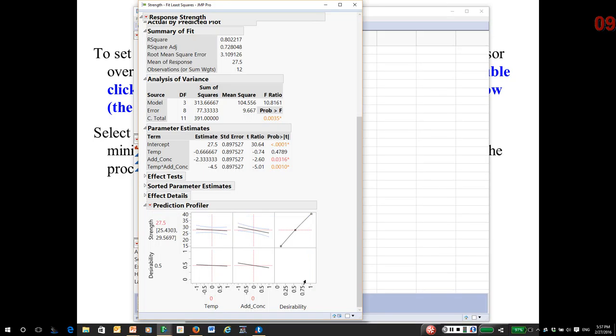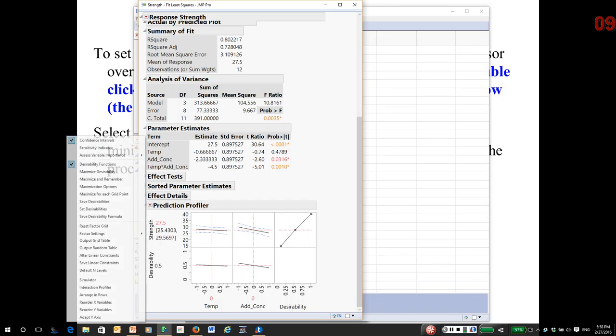the default is to maximize. So every value of strength is converted. This is just a straight linear function is converted to desirability. So what I'm going to tell JMP to do is, using the model,